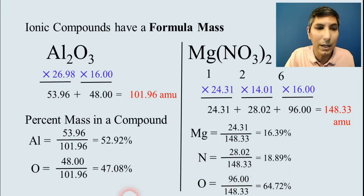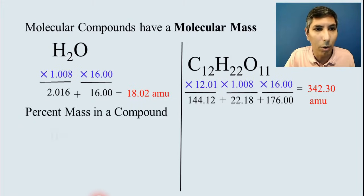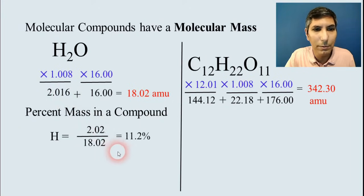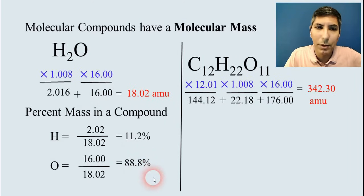And it doesn't have to be ionic. You can do this for the molecular compounds we talked about as well in the last video. So in the case of water, hydrogen would be about 2.02 divided by 18.02, about 11.2 percent. The same thing for oxygen. The 16 divided by the total gets you about 88.8 percent.